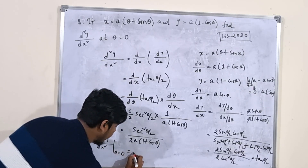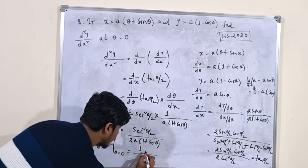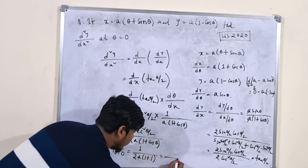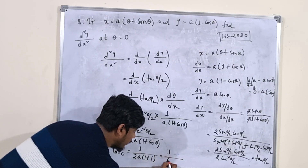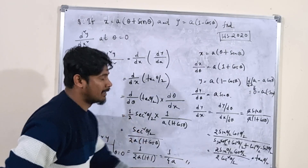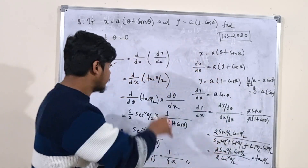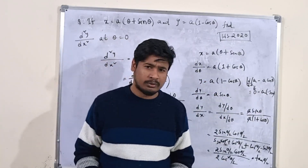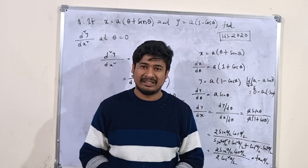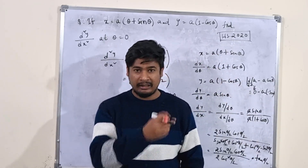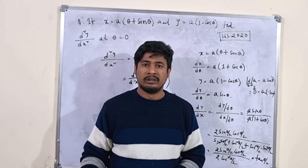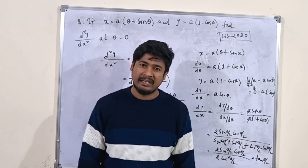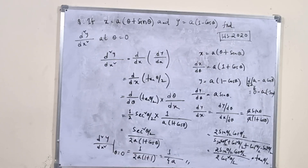Now substituting θ = 0: sec(0) = 1, so sec²(0) = 1. And cos(0) = 1, so 1 + cos(0) = 2. The final answer is 1 / (2a × 2) = 1/(4a). This question is not that tough, but the process is a bit involved. If you need more solutions or information about entrance exams, comment below. Thank you, bye!